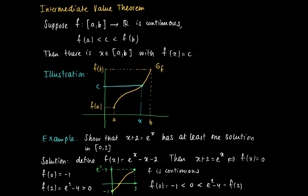So this together shows that there should be an x such that F equals C. So there should be a solution to the equation F = 0, and therefore a solution to the equation x + 2 = e^x.